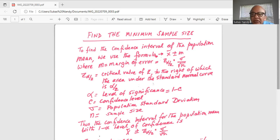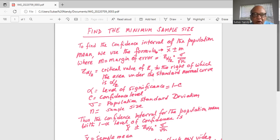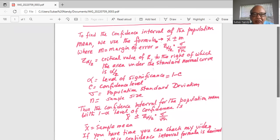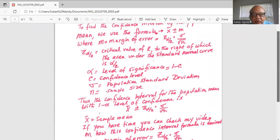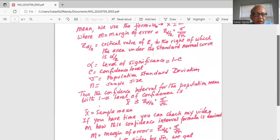Thus the confidence interval for the population mean with 1 minus alpha level of confidence is x bar sample mean plus minus z alpha by 2 multiplied by sigma divided by square root of n. If you have time, you can check out my video on how this confidence interval formula is derived.